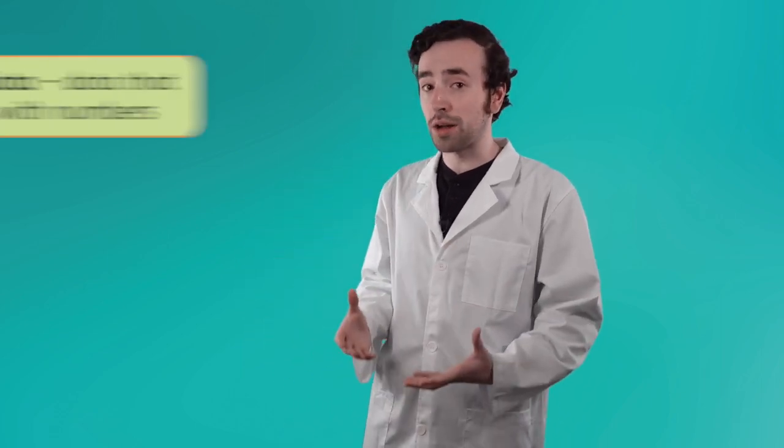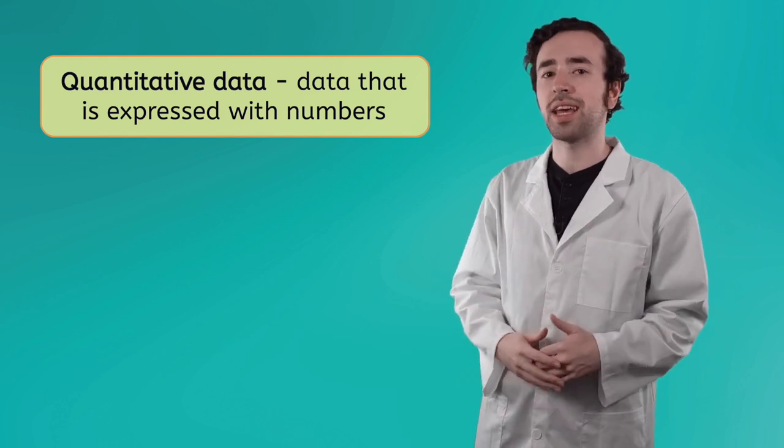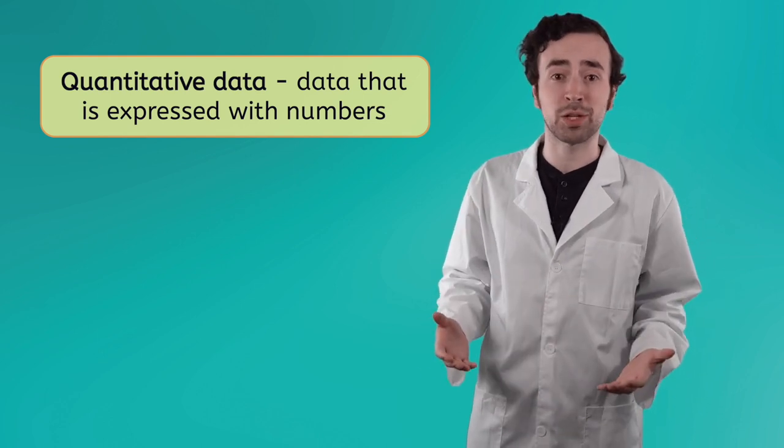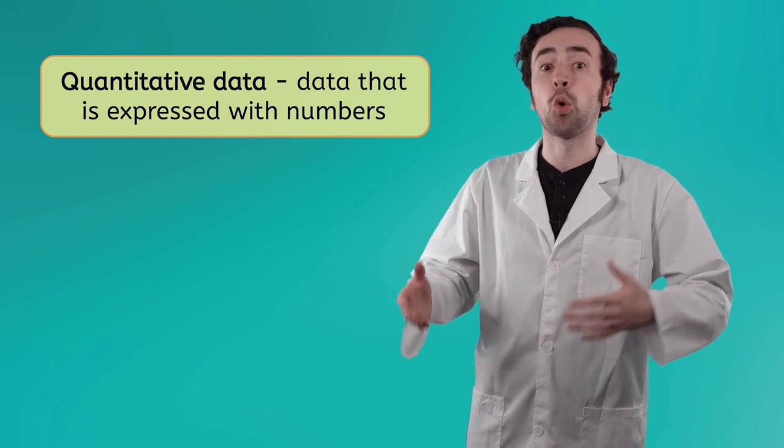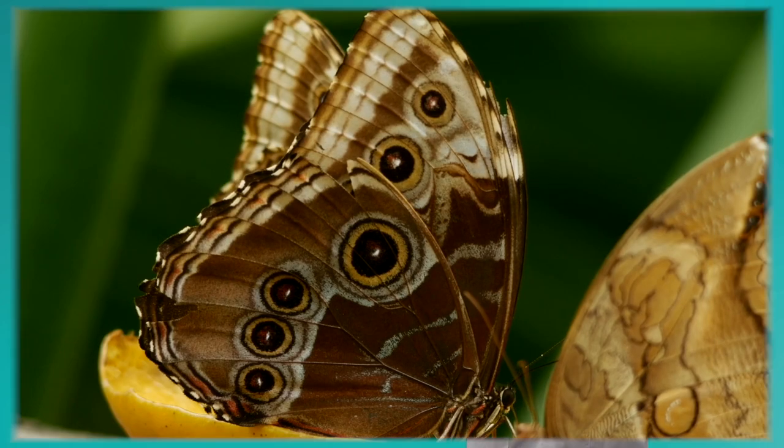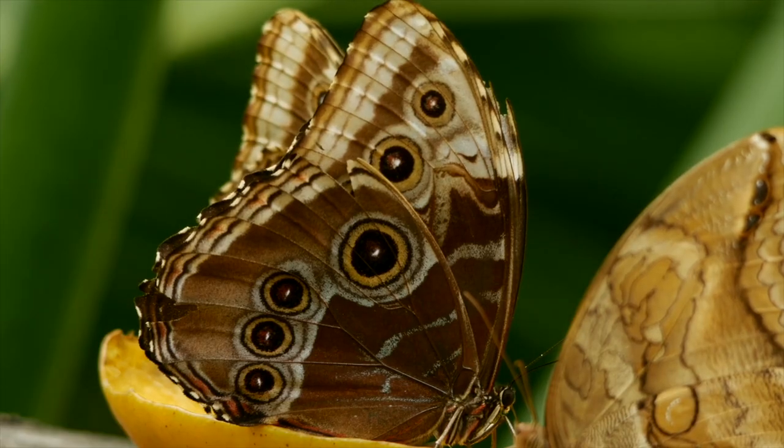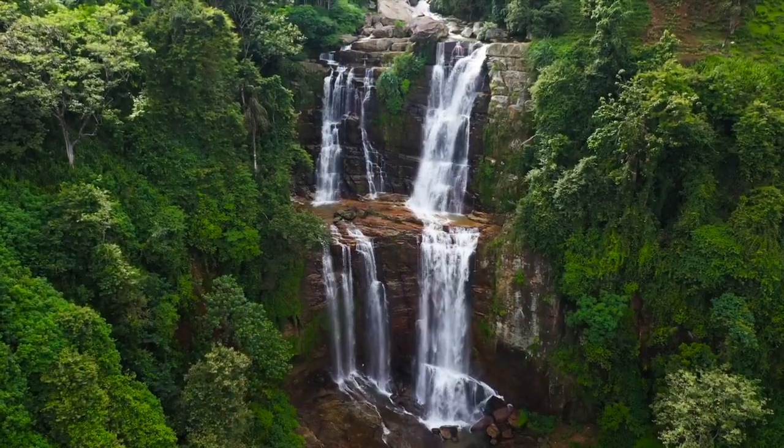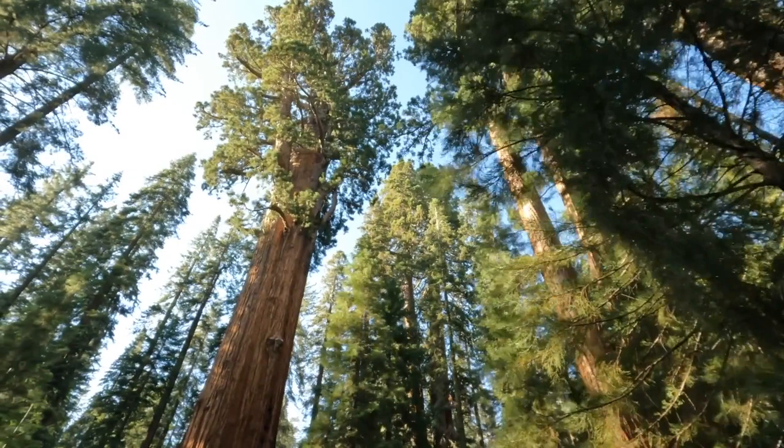So what'd you come up with? Now we also have quantitative data. Quantitative data is data that can be measured in numbers. It's either measured or counted. Some examples of quantitative data would be the number of spots on a butterfly's wings, the temperature of a rainforest, or the height of a redwood tree. I'm sure you can think of some more examples of quantitative data. Pause the video here and jot down your thoughts in your guided notes.